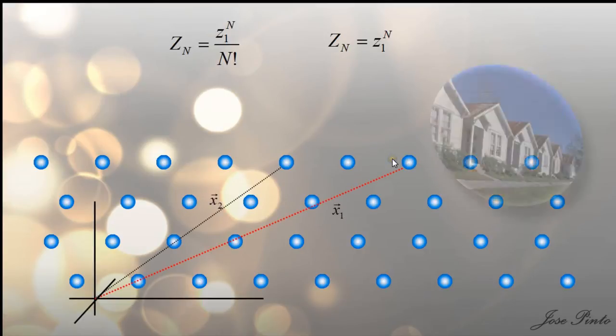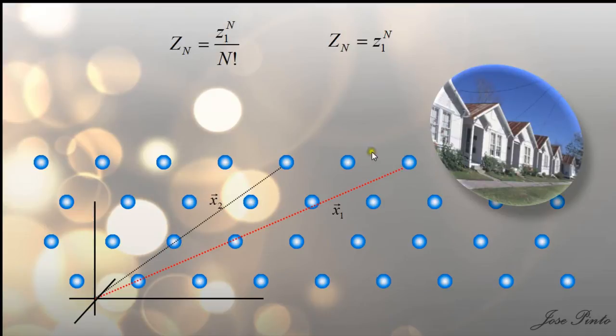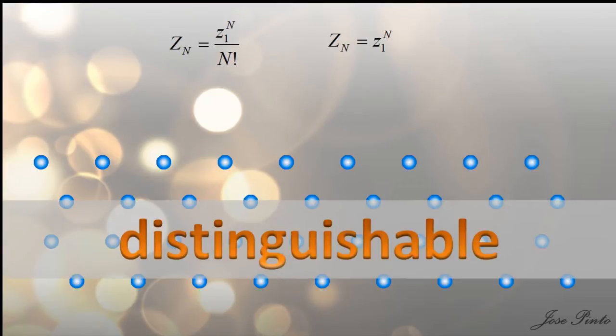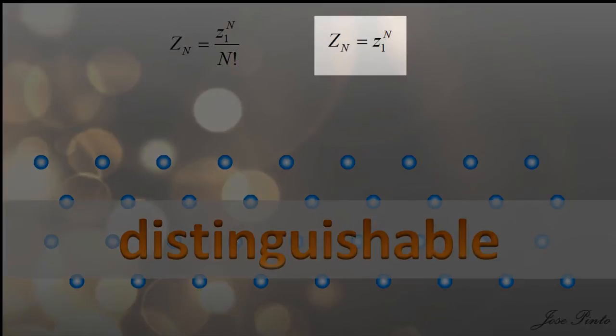They have an address. And because of this, you can tell the difference between one and another. So this system is distinguishable. For this kind of systems, you use this partition function.